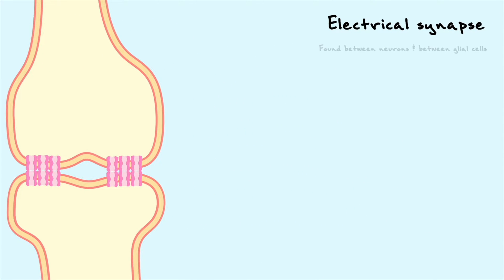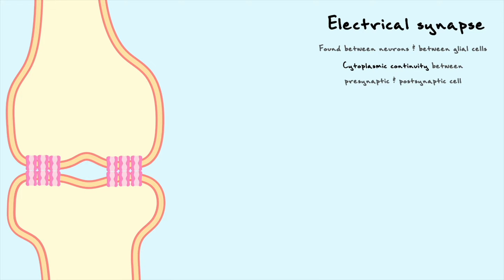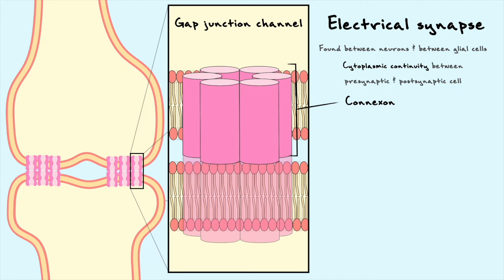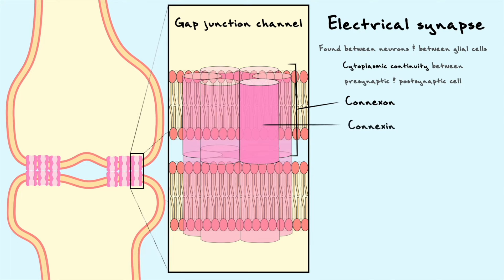Electrical synapses are found between neurons and between glial cells, and are characterized by a cytoplasmic continuity between the pre- and postsynaptic cells. This continuity is facilitated by gap junction channels. One gap junction channel is made of two connexons, each embedded in the membrane of the pre- and postsynaptic cell. One connexon is made of six connexins, so one gap junction is made of two connexons, or 12 connexins.